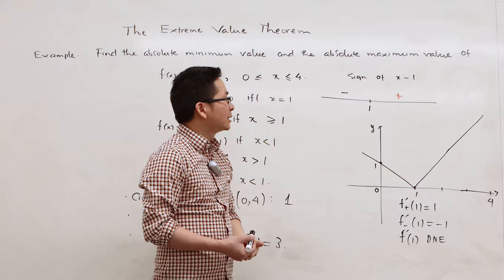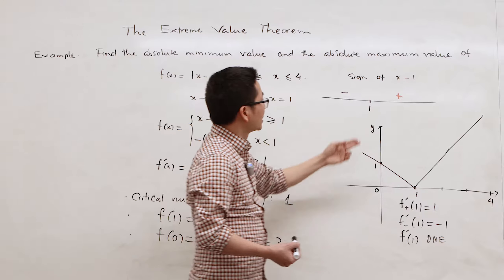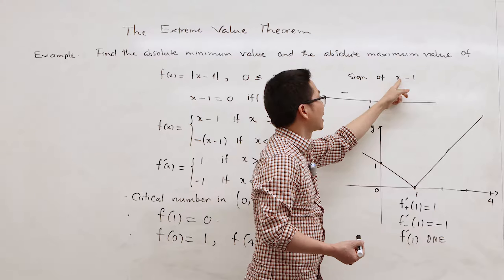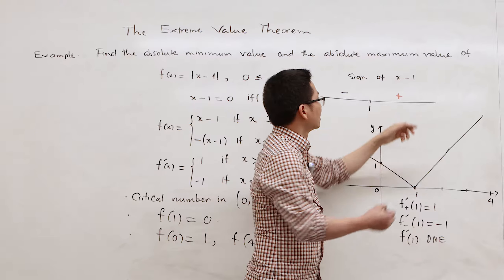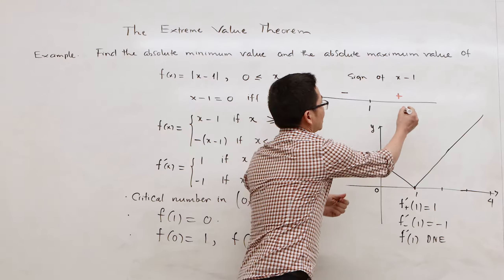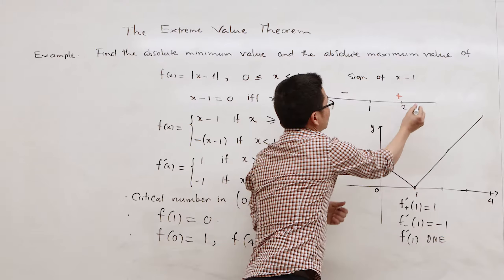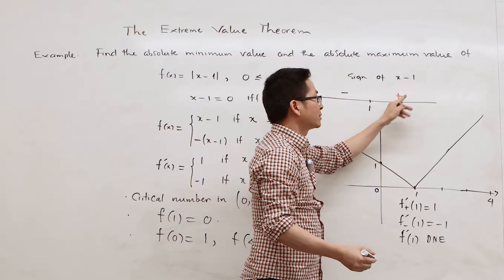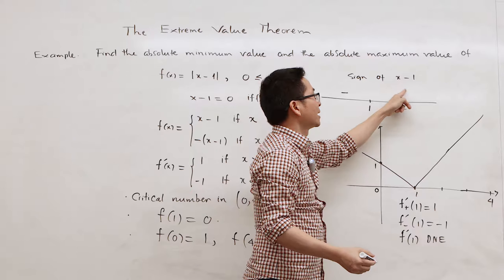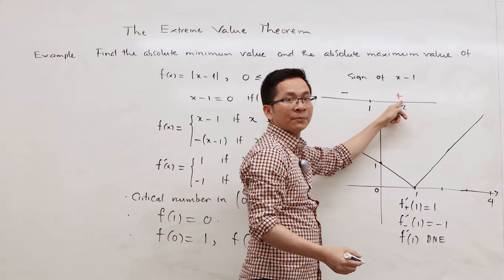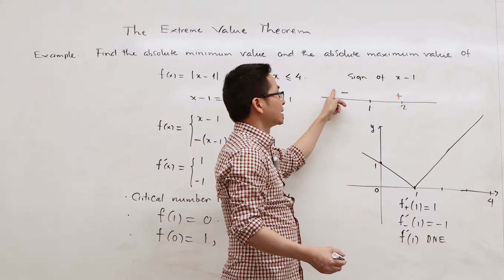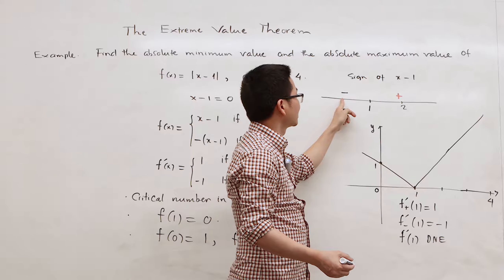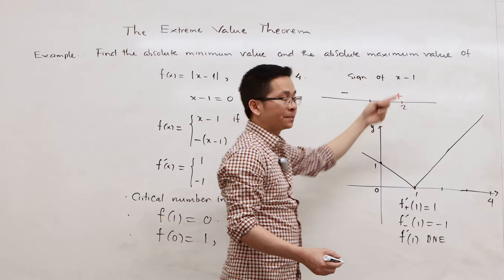How can we see that? We can substitute x by, say, 2. Then 2 minus 1 is positive, so the sign is positive. Similarly, the sign is negative when we replace x by 0, since 0 minus 1 is negative.